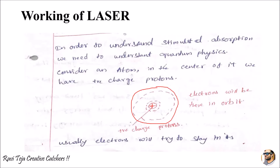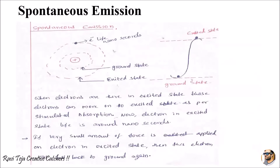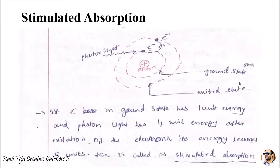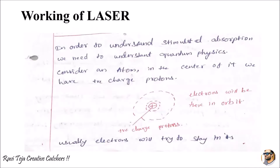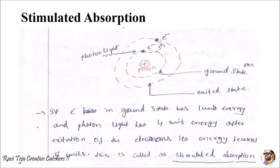The electrons are in a particular orbit and they try to stay in their own position. When a photon or some sort of photon light falls on this particular atom, the electron in the ground state has, let us say, one unit of energy, and the photon light has four units of energy. After excitation of the electron it becomes five units. This is called stimulated absorption.